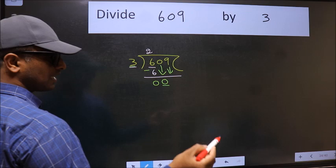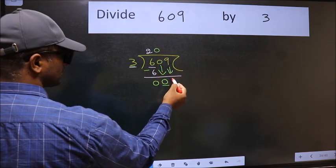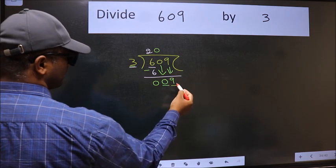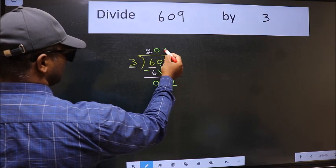And the rule to bring down second number is we should put 0 here. Then only we can bring this number down. Now 9. A number close to, when do we get 9 in 3 table? 3 times 3 is 9.